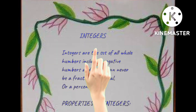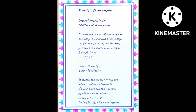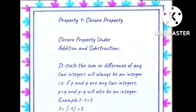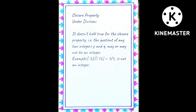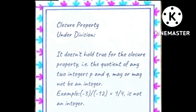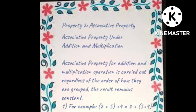The next page is about integers and information about them, then properties of integers. The first one is closure property — closure property under addition and subtraction, then closure property under multiplication, then closure property under division, with information provided for each.